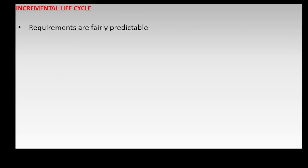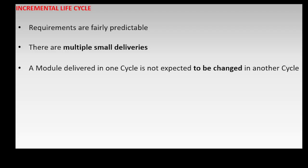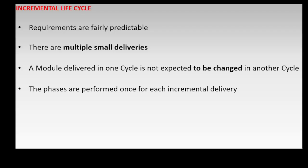In the incremental life cycle, requirements are fairly predictable and are grouped into modules or increments. There are multiple small deliveries. A project is completed in several small cycles, building and delivering each module or increment in each cycle up to the last cycle. A module delivered in one cycle is not expected to be changed or refined in another cycle. The goal is usually speed.